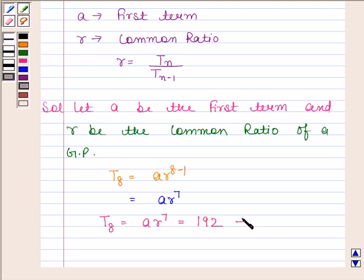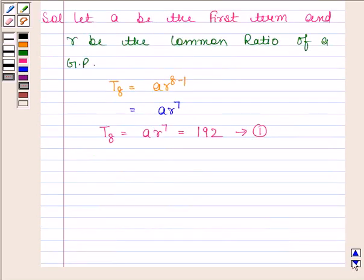Let's name this equation as equation number 1. Now the 12th term, that is T12, is equal to a times r to the power 12 minus 1, and this is equal to a times r to the power 11. Now ar to the power 11 can be written as ar to the power 7 times r to the power 4.